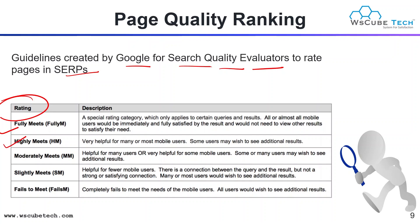Next we have 'Highly Meets' — very helpful for many or most mobile users, though some users may wish to see additional results. Then 'Moderately Meets' — helpful for many users or very helpful for some, but some users may wish to see additional results. 'Slightly Meets' — helpful for few mobile users; there is a connection between the query and result, but not a strong or satisfying one. And finally 'Fails to Meet' — completely fails to meet the need of mobile users; all users would wish to see additional results.